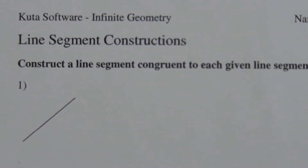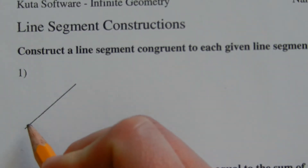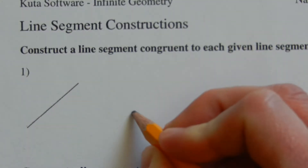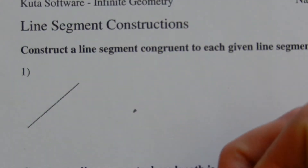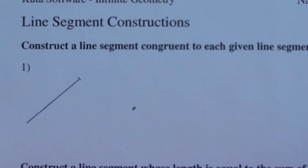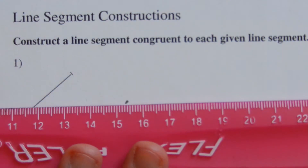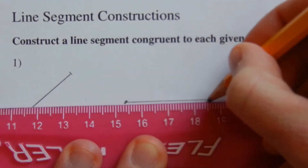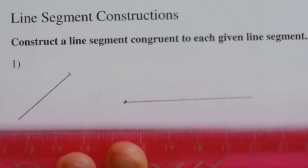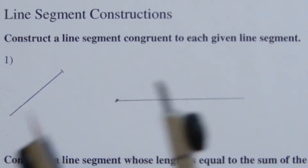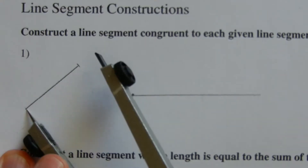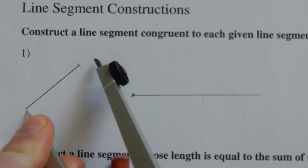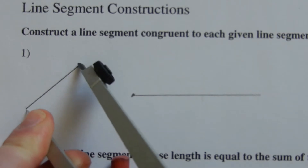Looking at number one, we want to construct a line segment congruent to the given line segment. Congruent means it's going to be the same measure. So we have our one endpoint and I'm going to draw the endpoint of my other line that I'm going to be constructing. I'll draw a straight edge that will become my new congruent line, a little bit longer than the given line. Now I'm going to take my compass, place one point on the endpoint of the given line, and adjust so the pencil point sits on the other endpoint.